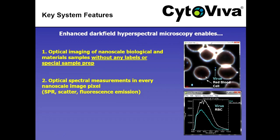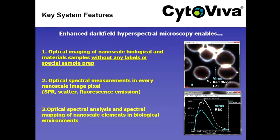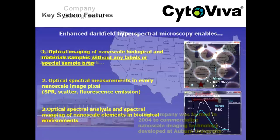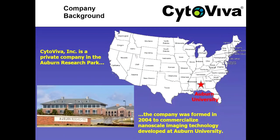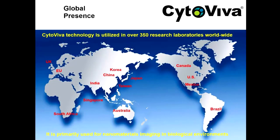The red blood cell, principally because of the hemoglobin, produces an emission — whether you call that scatter, photoluminescence, or bioluminescence — with slightly different characteristics. Because we have all of the spectrum in every pixel, detailed optical spectral analysis can be conducted. CytoViva is a private company born out of research at Auburn University, developed to commercialize nanoscale optical imaging technology. We've been providing these technologies for about 15 years with distribution in over 350 research labs worldwide.